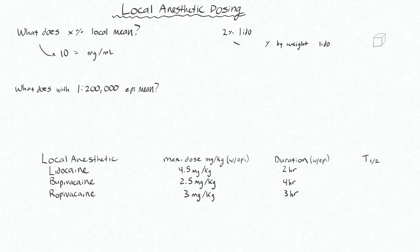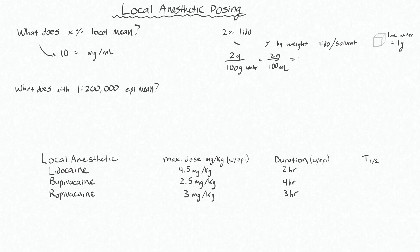For your lidocaine or local anesthetic solvent, we know that a mil of water or solvent is one gram. So if we have two percent, we have two grams of local anesthetic for a hundred grams of water, or two grams per hundred mils of water, or 0.02 grams per mil, which is 20 milligrams per milliliter.